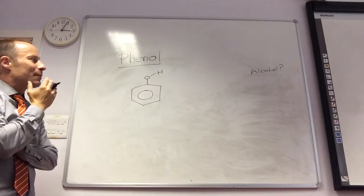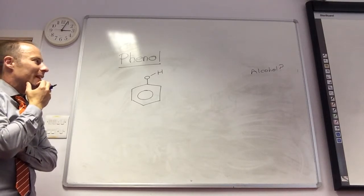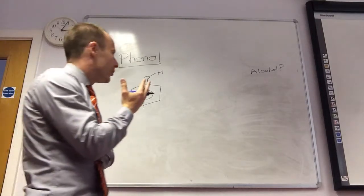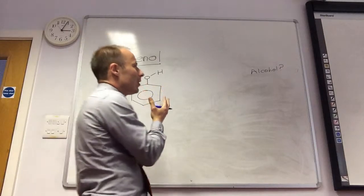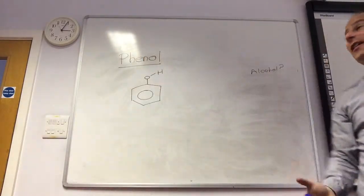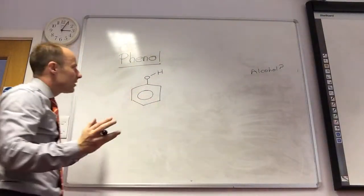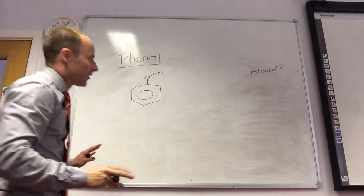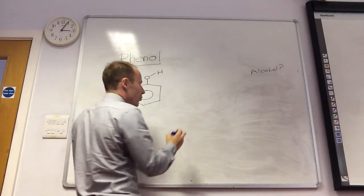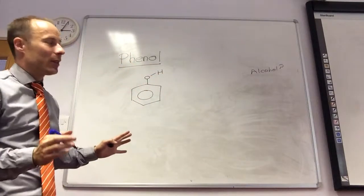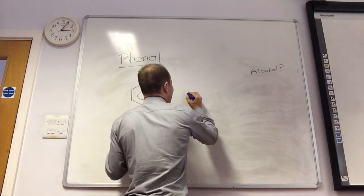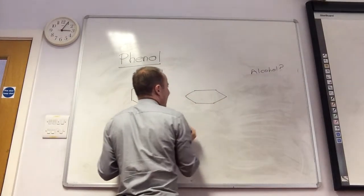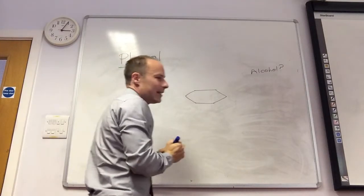The benzene ring has a big effect on that group. And to understand why, we're going to try and draw out the bonding. Initially, you look at that and you think, alcohol, it's going to behave exactly like chemistry. It doesn't. So, let's try and draw out the bonding. And again, I'm going to attempt to do this in 3D.